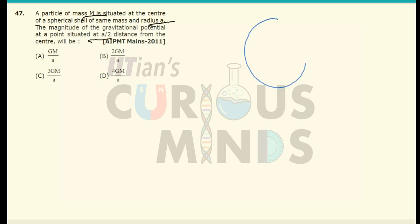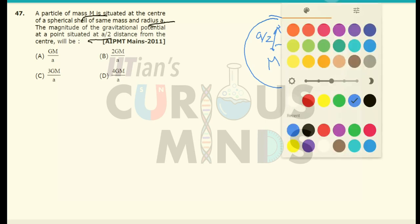If I consider this as the spherical shell of mass M, there is a point particle situated at the center of mass M. The radius of this shell is equal to A and we have to find out the gravitational potential at a distance of A by 2 from the center.